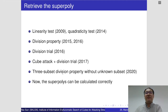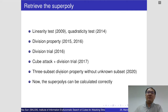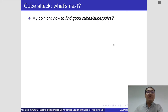After many improvements on the division properties, finally the three-subset division property without unknown subset was presented in 2020. Since then, the problem of how to retrieve the superpoly was solved completely. In my opinion, the next problem to be solved in the cube attack is how to find good cubes or superpolys. Since one cube corresponds to exactly one superpoly, searching for cubes is equivalent to searching for superpolys.